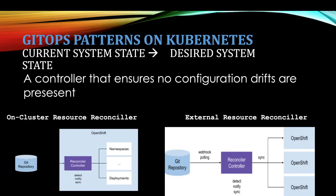There are two different GitOps patterns. The idea is to move the current system state to the desired system state, and the controller ensures that no configuration drift is present. The two approaches are: one is an on-cluster resource reconciler, and the other is an external resource reconciler. The on-cluster resource reconciler runs the reconciler controller inside the OpenShift or Kubernetes cluster, while the external resource reconciler places the reconciler outside the cluster. They do the same thing — detect, notify, sync — the difference is just where the resource reconciler lives.